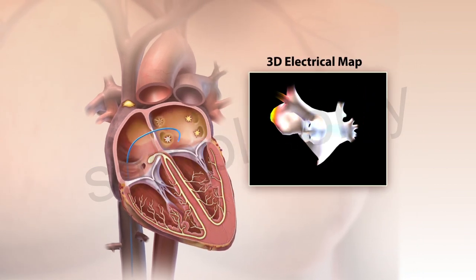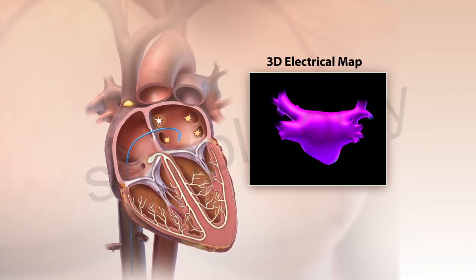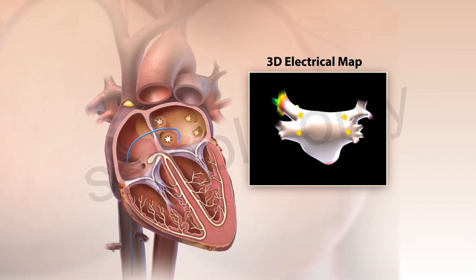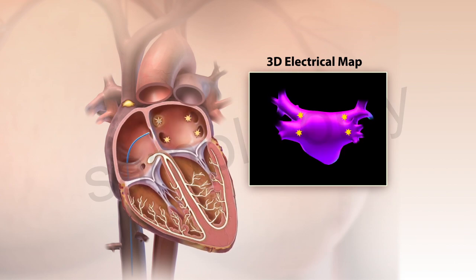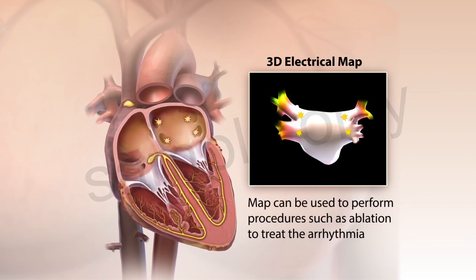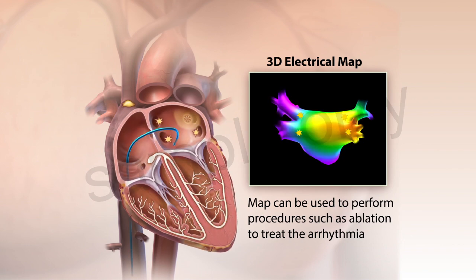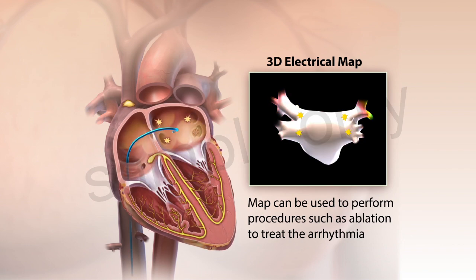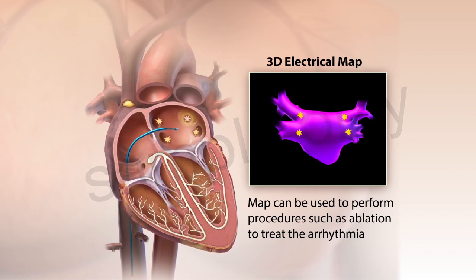This animation shows the electrical mapping of the left atrium and the origins of electrical signals causing atrial fibrillation. The physician can use this mapping to perform procedures such as ablation to treat the arrhythmia.